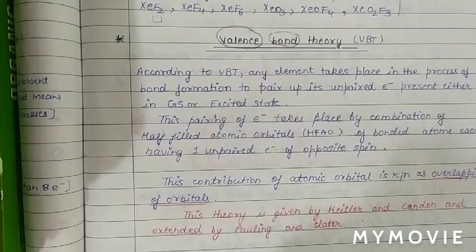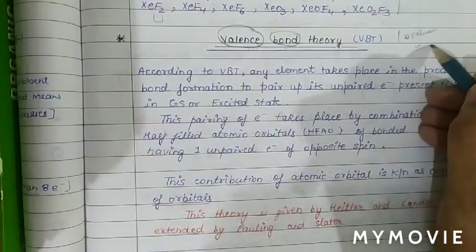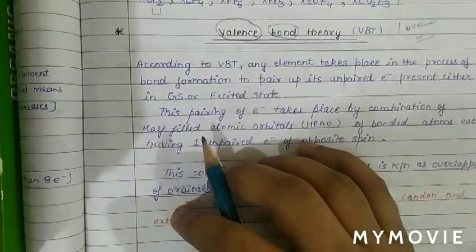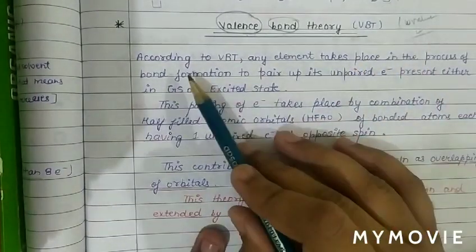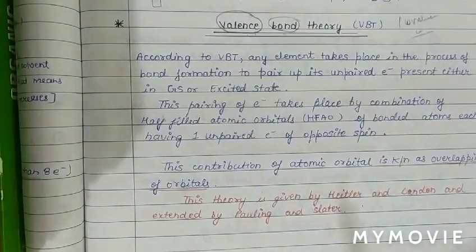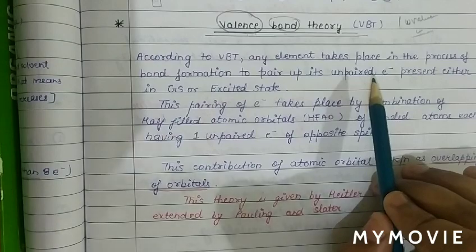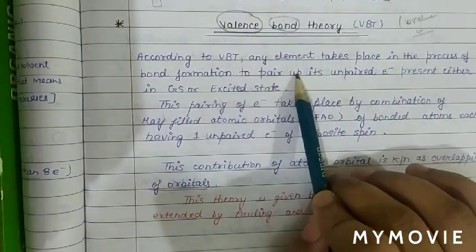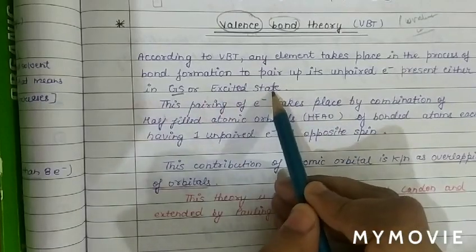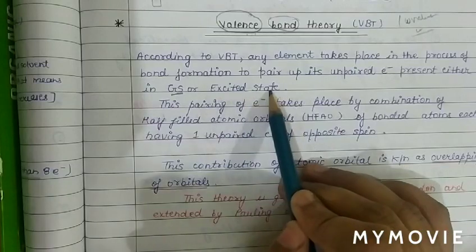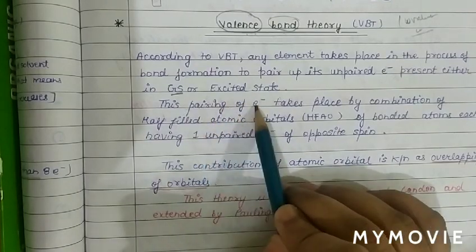In Valence Bond Theory, any element — nitrogen, oxygen, etc. — takes part in bond formation to pair up its unpaired electrons. These unpaired electrons may be present in the ground state or in the excited state. The atom will try to pair up its unpaired electrons and form a bond.